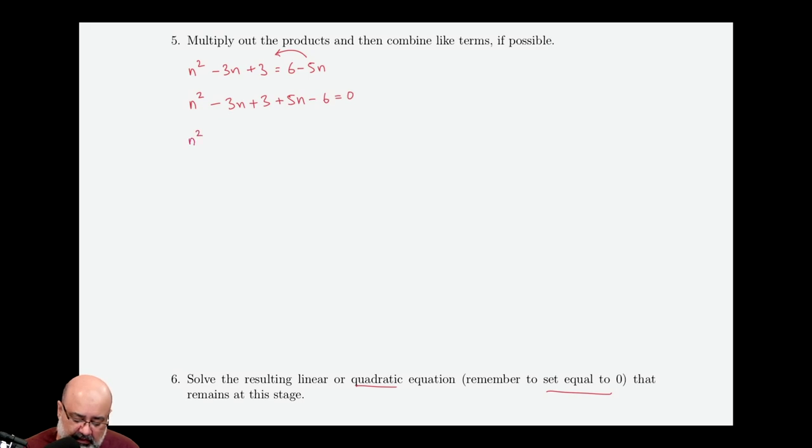So now n squared stays. Negative 3n plus 5n would give us plus 2n. 3 minus 6 would give us minus 3 equals 0. And now we recognize that there's no GCF. We have three terms. The formulas are not going to work because the signs don't match. The leading coefficient is 1, so we can factor using the AC method. So we find factors of negative 3. Should be a pretty short list since 3 is a prime number. So we're just left with 1 and negative 3 and negative 1 and 3. Well, the factors we're looking for are negative 1 and 3 because they add up to 2.